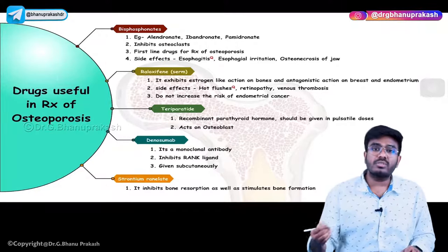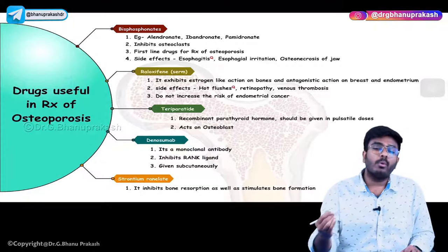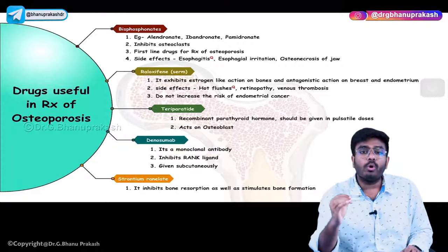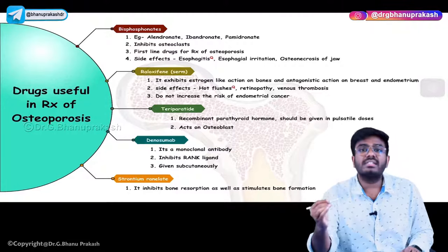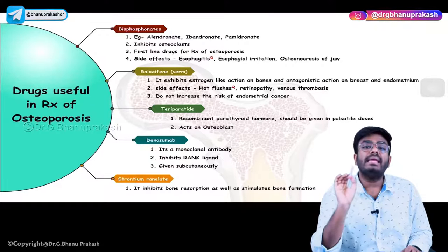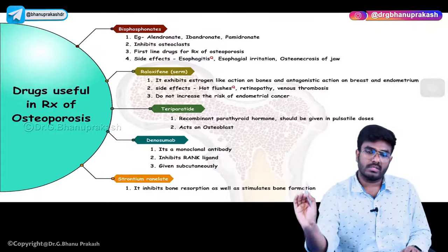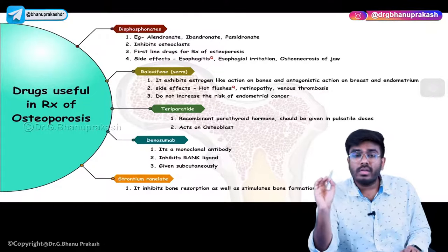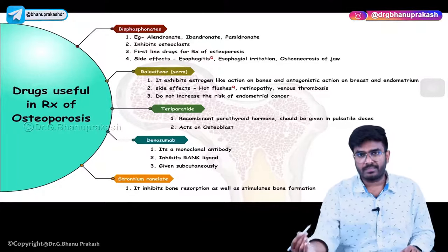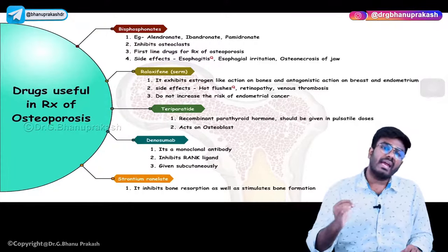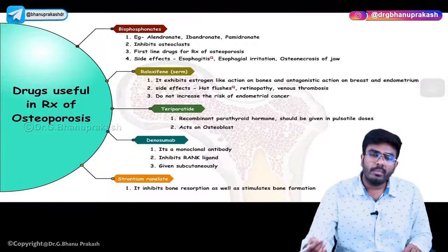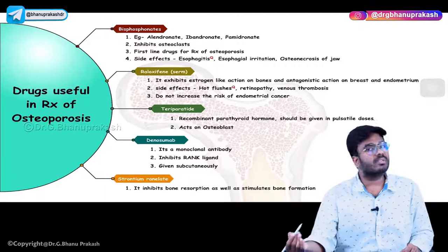Another drug is raloxifene, which is a SERM — a selective estrogen receptor modulator. Estrogens are bone-protective, meaning estrogens normally inhibit osteoclasts so there is no bone resorption. Raloxifene acts like estrogen and also inhibits osteoclasts, preventing bone resorption and thus treating osteoporosis.